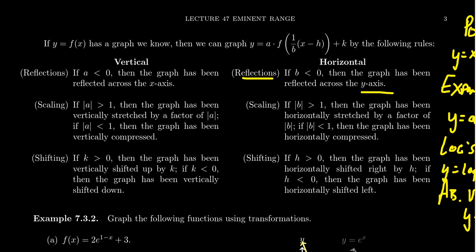We recognize reflections by multiplication by a negative. If that negative sign is outside of the function, it's a vertical transformation — reflection across the x-axis. If that negative sign is inside of the function, it causes a horizontal reflection — reflection across the y-axis. If you reflect across both the x-axis and the y-axis, this has the effect of reflecting through the origin, like a 180-degree spin.